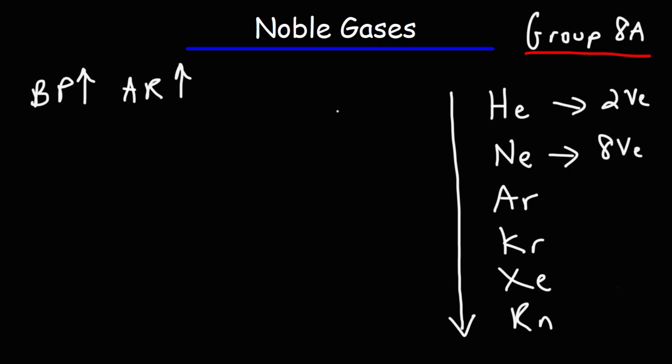Helium has a boiling point of around negative 270 and this is in Celsius. For neon, it's negative 246. Argon, negative 186. Krypton is negative 153. Xenon, negative 107. And radon, negative 62. So those are the boiling points of the gases.